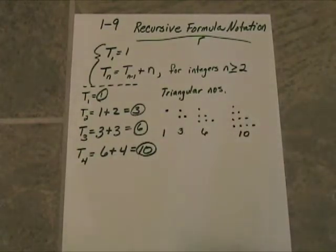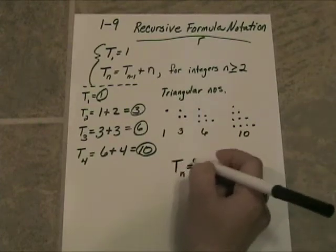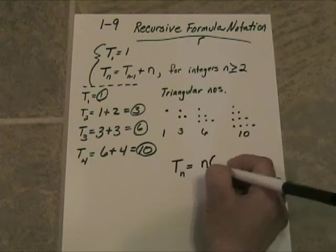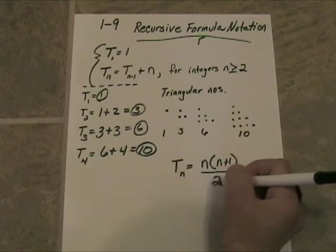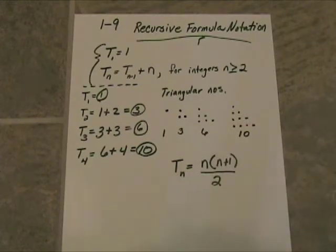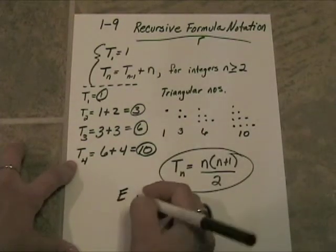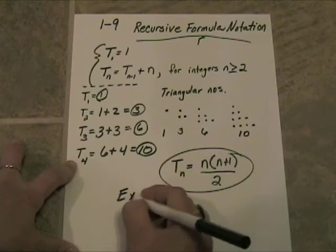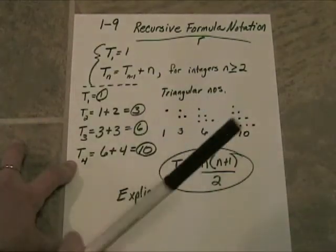But, in lesson 1, 7a, we learned an explicit formula to describe triangular numbers. And that formula was this. T sub n was equal to n times the quantity, n plus 1, closed quantity, all divided by 2. So it turns out that there, in this particular case, we have an explicit function, as well as recursive formula that will describe triangular numbers.